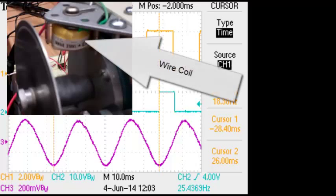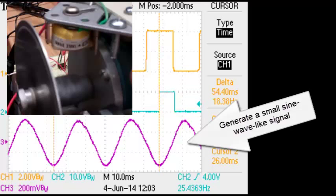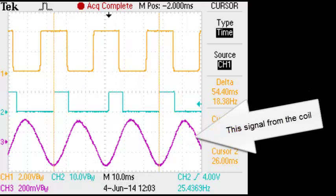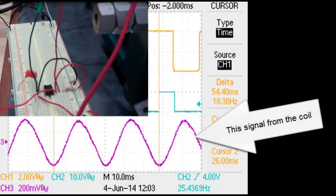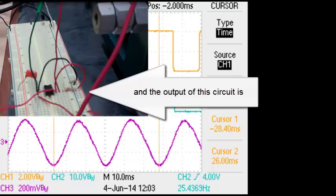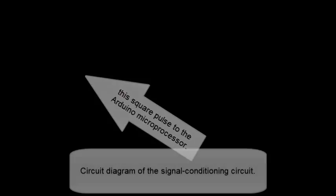There are the rotating magnets and the wire coil. They generate a small sine wave-like signal set at 0.2 volts per division. This signal comes from the coil and goes to the input of the signal conditioning circuit. The output of this circuit is the square pulse to the Arduino microprocessor.